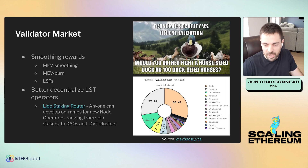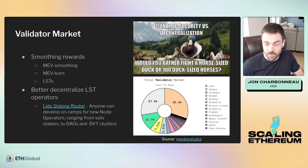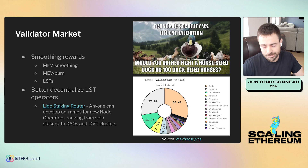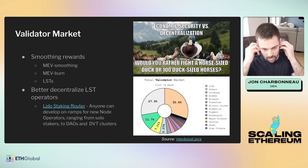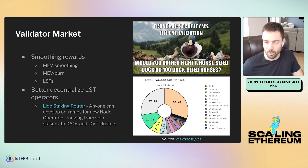Looking at the validator market, a handful of large operators control a very large amount of the stake. While we have high economic security, we'd like to much more decentralize the actual stake behind that. Liquid staking providers like Lido and Rocket Pool have a number of operators underneath the hood and offer nice benefits to users by effectively smoothing rewards and giving them a liquid token. There will be a lot of development here — things like Lido's staking router bringing in distributed validator technology to decentralize the operators even more.